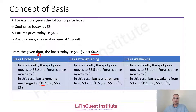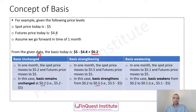Next, let's understand basis strengthening. Let's say in one month the spot price has moved to $5.50 and the futures price has moved to $5.00. Taking the difference: $5.50 minus $5.00 gives us $0.50. This is what we call a strengthening of basis, because comparing $0.50 against the earlier value of $0.20 shows an increase.